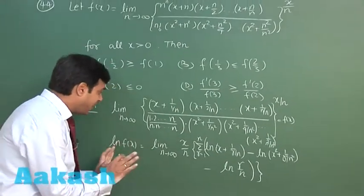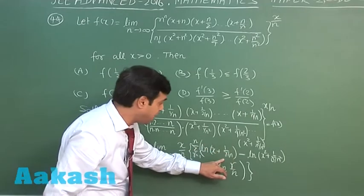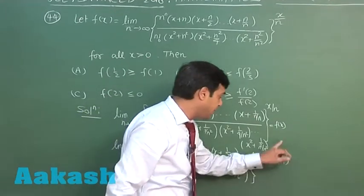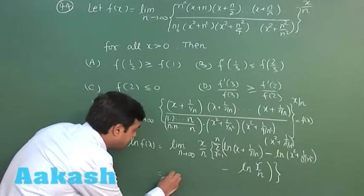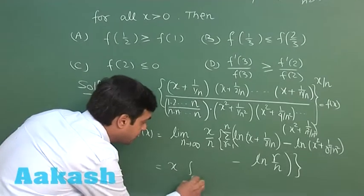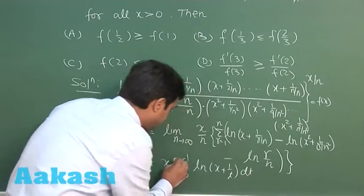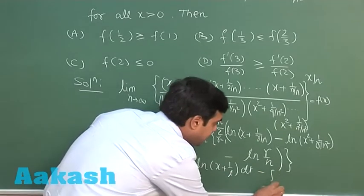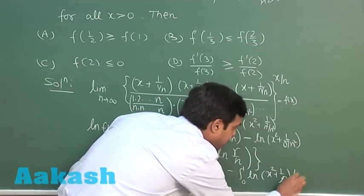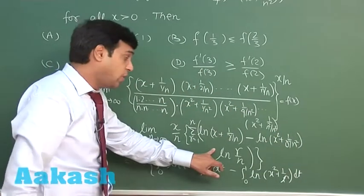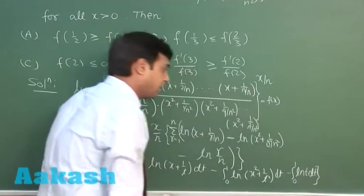We finally obtain, as n→∞, the limit becomes x times the integral from 0 to 1 of [log(x + t) − log(x² + t²) − log(t)] dt, converting the Riemann sum to a definite integral with t as the variable.